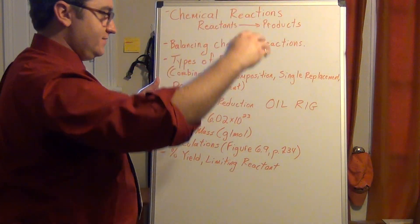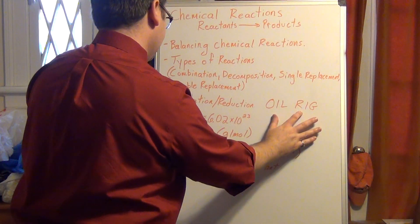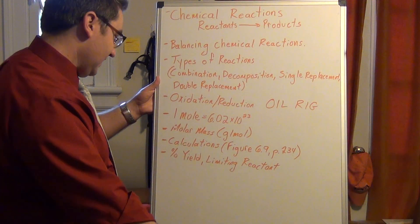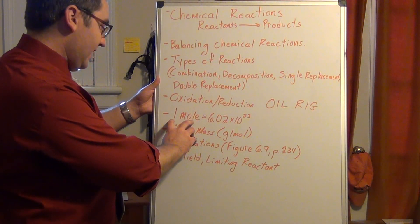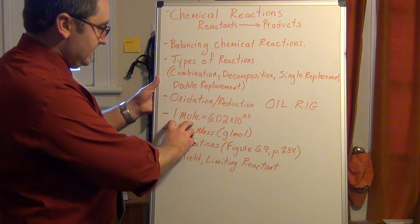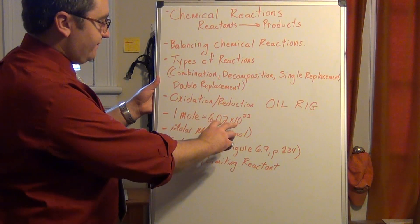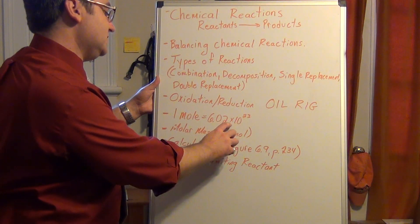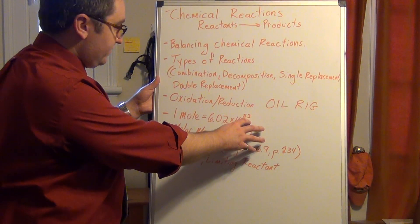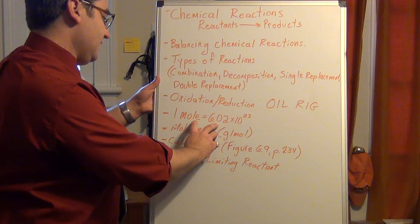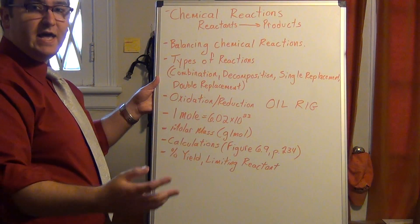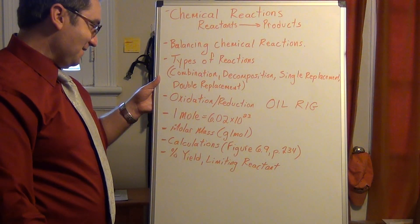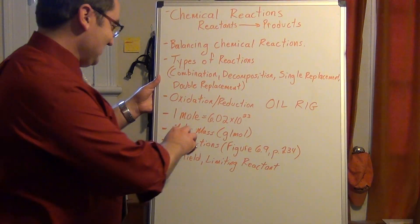The next part is going to deal with moles. Know these aren't the little guys that are digging holes underground. A mole is one mole of an element can be defined as a really large number. This is 6.02 times 10 to the 23. This is going to be a conversion that you can use, just like a dozen.